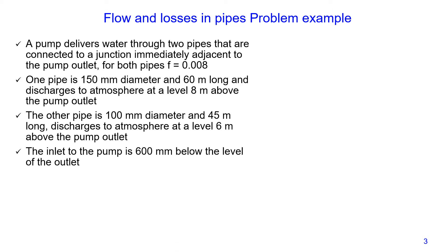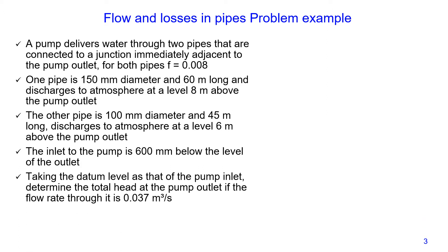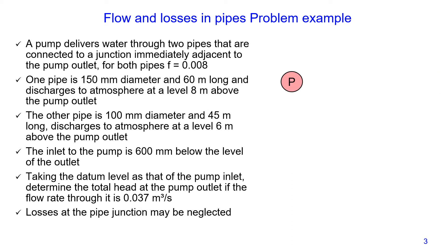The inlet to the pump is 600 mm below the level of the outlet. Taking the datum level as that of the pump inlet, we need to determine the total head at the pump outlet if the flow rate through the pump is 0.037 m³ per second, and losses at the pipe junction may be neglected. Let's do a diagram for this setup.